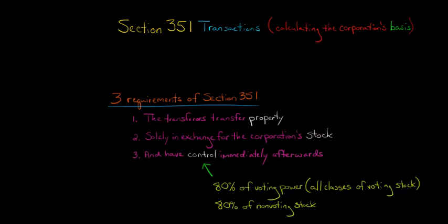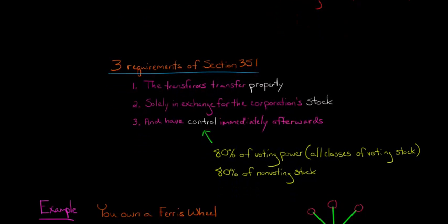In this video, we're going to talk about how to calculate the basis of assets received by a corporation in a Section 351 transaction. Section 351 is where transferors transfer property to a corporation in exchange for the corporation's stock, deferring recognition of any built-in gains or losses on the property. When the corporation receives this property, what is the corporation's basis? Basically it's a carryover basis from the transferors, but with a couple of adjustments.